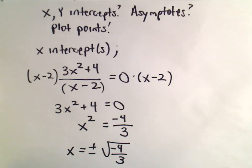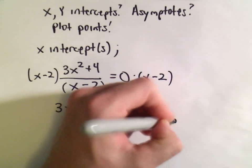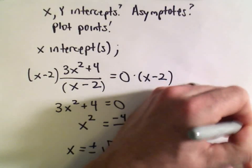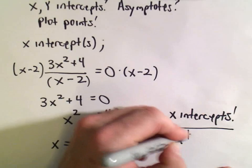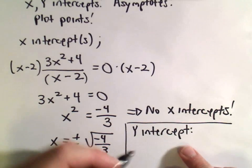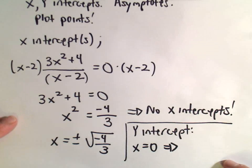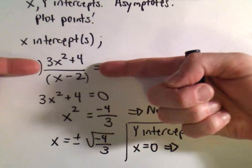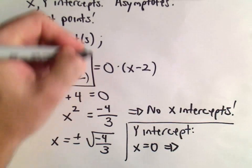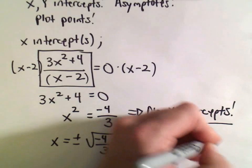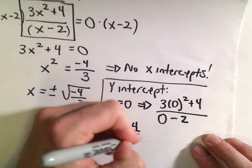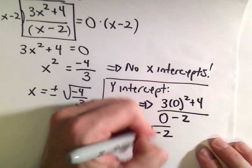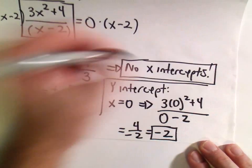There are no real number solutions to that equation, so there are no x-intercepts. For the y-intercept, we plug in x = 0 into (3x² + 4) / (x - 2), giving us (3·0² + 4) / (0 - 2) = 4 / -2 = -2. So the function crosses the y-axis at y = -2.